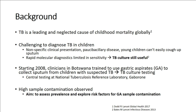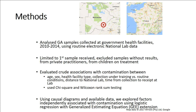I'm going to report the prevalence and the risk factors for gastric aspirate sample contamination. Botswana is the same size as France or Texas with 2.1 million people. The red dot shows where the lab is located in Gaborone. Some samples were travelling over 1,000 kilometres to reach the national lab.